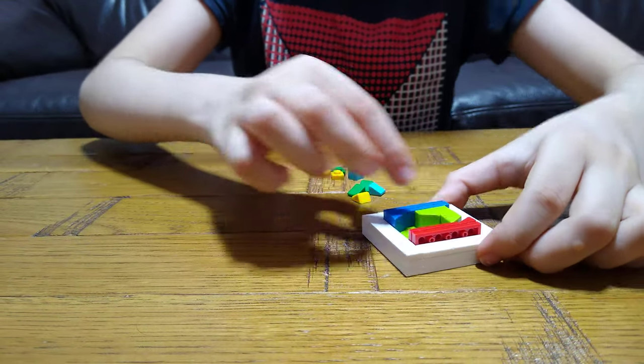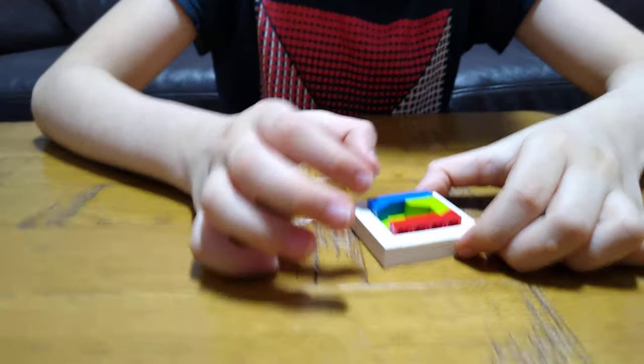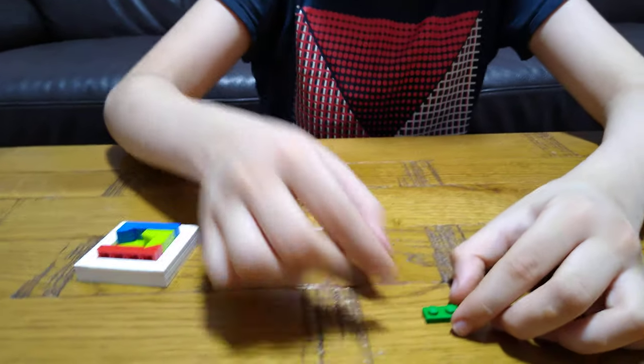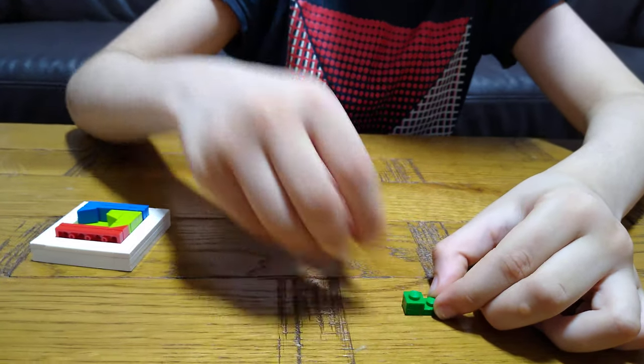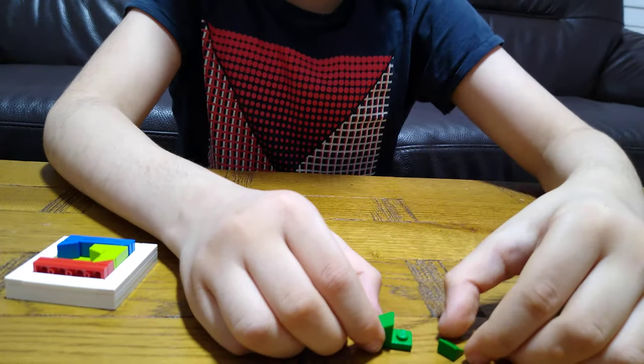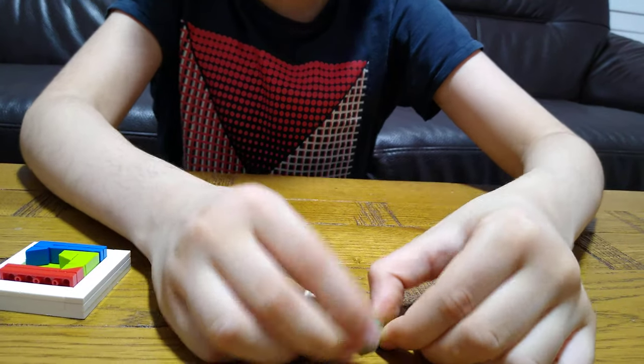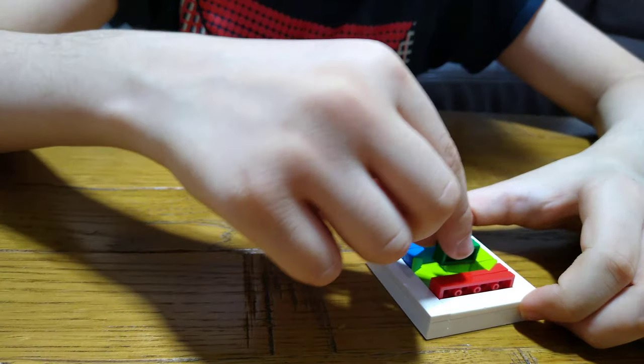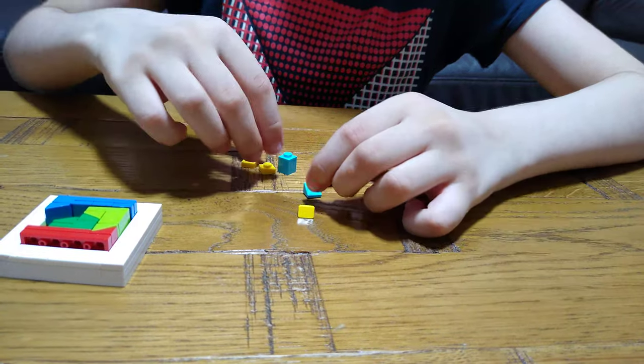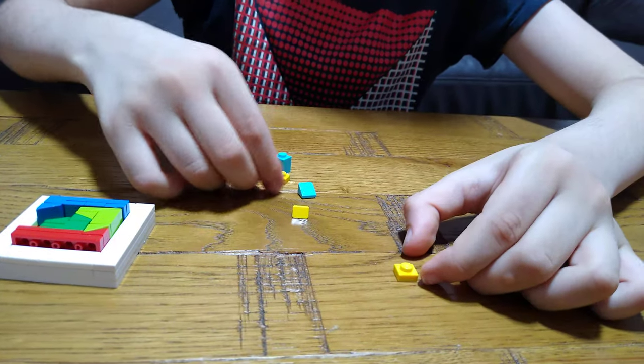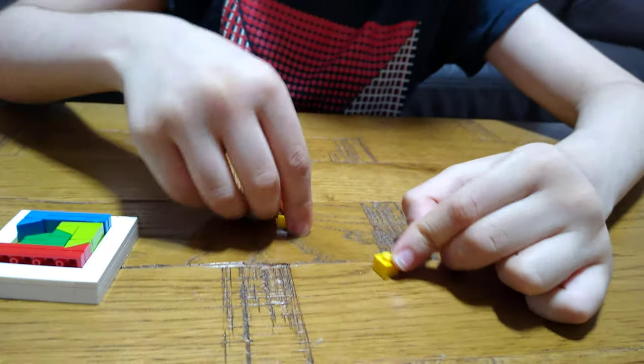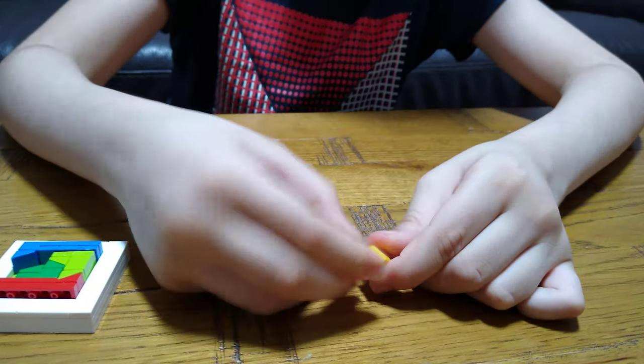And then we're going to get this, put this onto here like that. And now we're going to get this. And then we're going to get two of these yellow studs, put two on each other, and then a slope. And we get this again, put this yellow one over here.